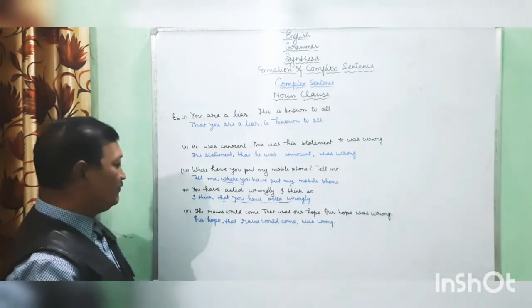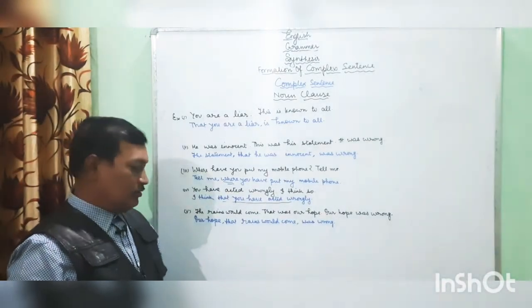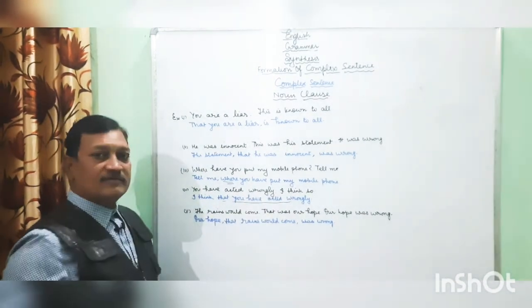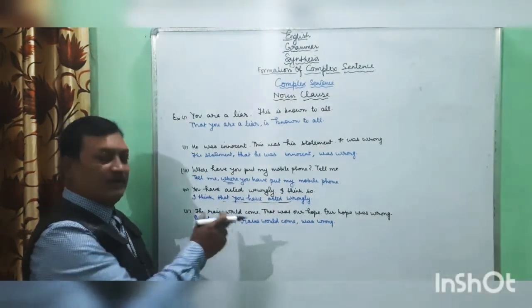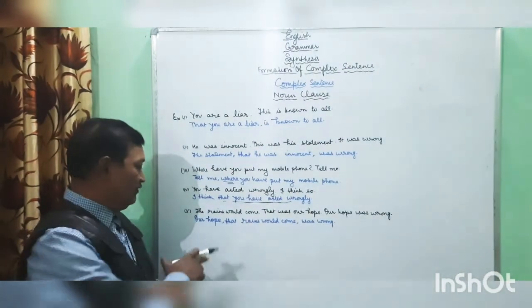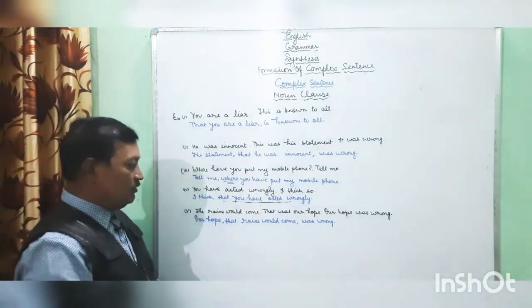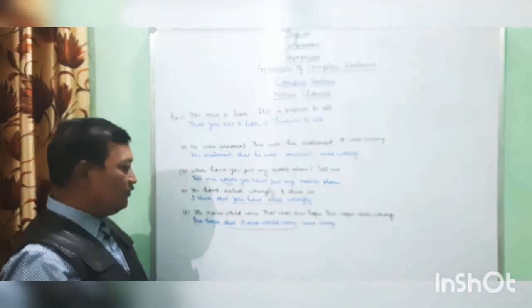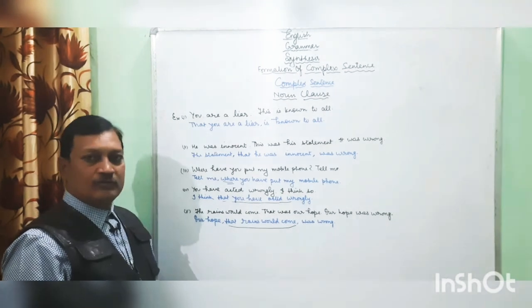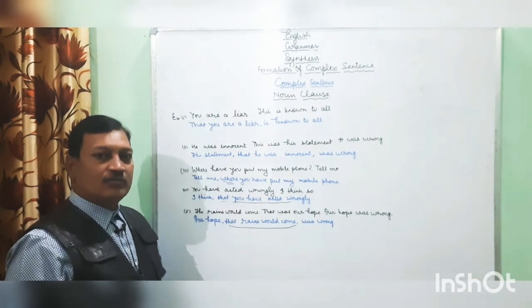Fifth exercise: 'The rains would come. That was our hope. Our hope was wrong.' Combined: 'Our hope that rains would come was wrong.' Here we have used case in apposition to combine these three sentences, using noun clause to form a complex sentence.